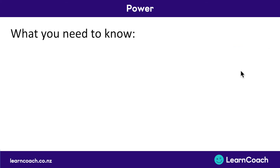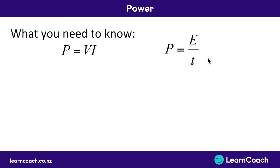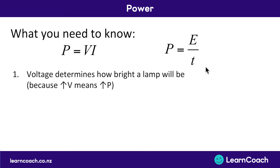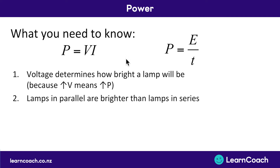Here's what you need to know from this video. You need to know the two equations for power, and most importantly that power equals voltage multiplied by current. You can also know that power is the amount of energy used divided by time. Voltage determines how bright a lamp will be, because an increased voltage means an increase in power. From previous videos, in a parallel circuit the voltage is the same in each branch, so each lamp has a higher voltage and therefore higher power — that's why the parallel circuit is actually brighter. Lamps in parallel are brighter than lamps in series because of this power equation.